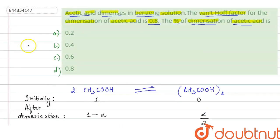If you look at the options, in option B it is given 0.4. So 0.4 is the correct answer. Option B is the answer. Thank you.